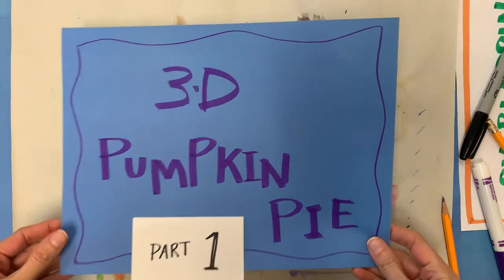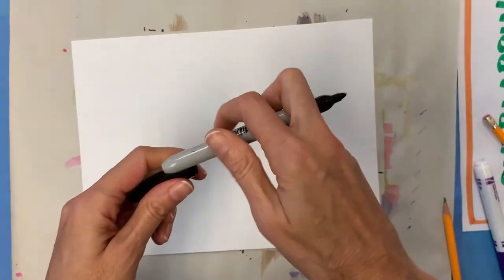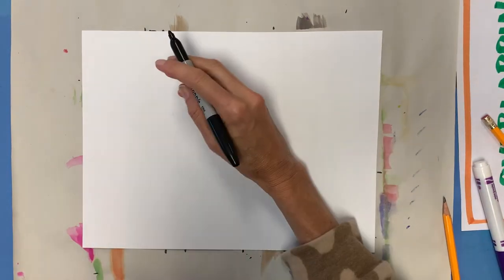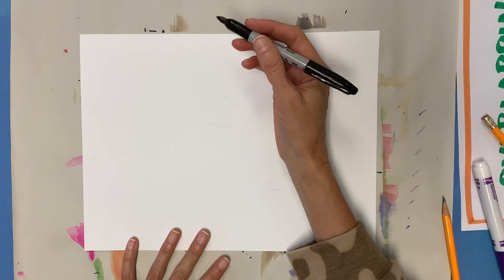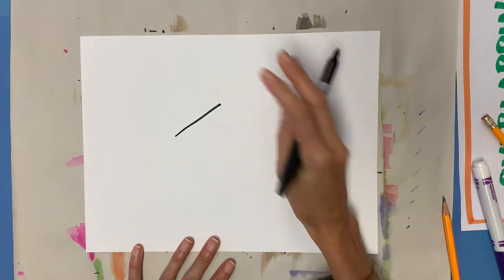Let's get started. I'm gonna do this in a marker so you can see it, but you definitely want to do this in pencil. There is some erasing involved. To start off, I'm gonna have you give me a diagonal line.